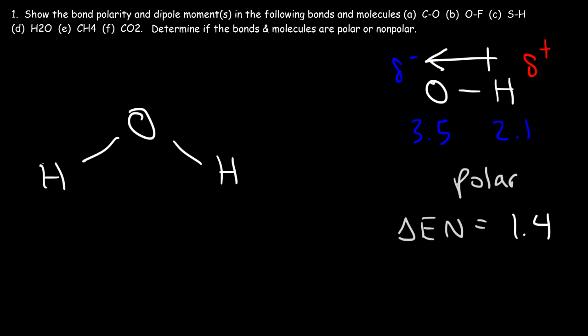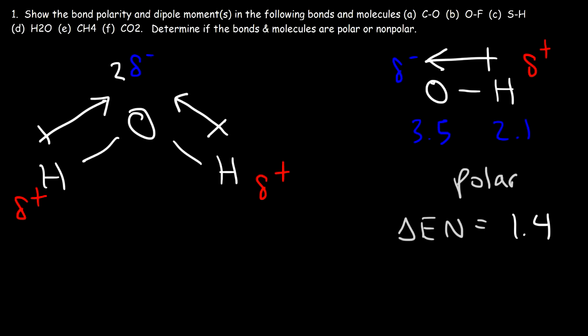Drawing the dipole moments for the molecule, both arrows point towards oxygen. To indicate bond polarity, hydrogen has a partial positive charge and there are two of them, so oxygen needs a partial negative charge twice the value — put a 2 in front of it to neutralize the two partial positive charges. That's how you indicate the bond polarity and dipole moment of a molecule. The final question is: is the molecule polar or nonpolar? You can have a molecule with polar bonds where the molecule itself is nonpolar overall.